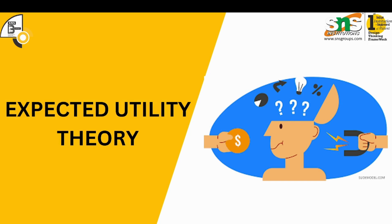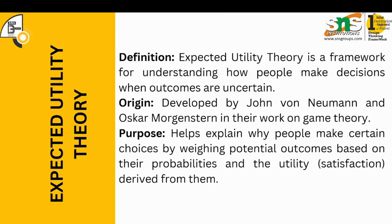This video focuses on expected utility theory. We will understand the different utility concepts and how expected utility matters in taking investment decisions. This theory is a framework for understanding how people make decisions when outcomes are uncertain. It was developed by John von Neumann and Oscar Morgenstern in their work on game theory, and it helps explain why people make certain choices by weighing potential outcomes based on their probabilities and the utility they derive from them.